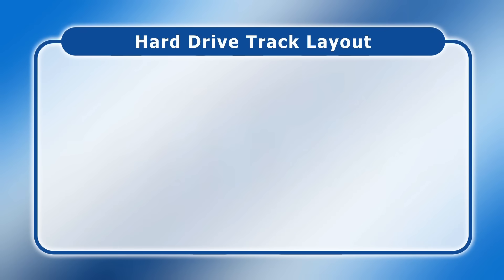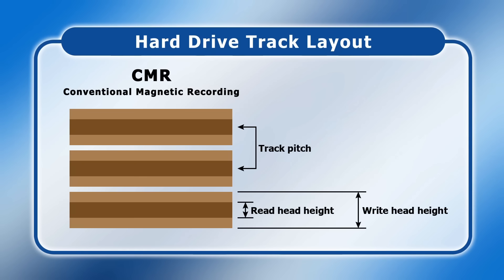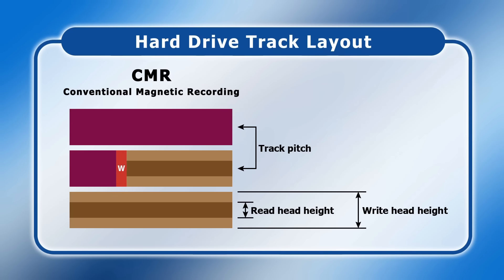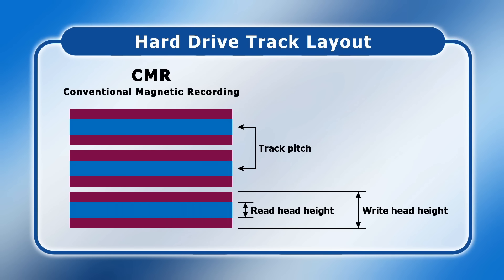There are two methods that hard drives may use to lay out the tracks on their platters. The first is what we now call conventional magnetic recording or CMR. Here a track pitch is determined by the size of the write head, which has to be larger than the read head. In CMR, tracks are laid down by the write head with a small guard band left in between to avoid magnetic interference. The tracks can then be read by the read head. However, there is some wasted space left between the areas that the read head needs to access, and this places a potential constraint on TPI and in turn areal density.